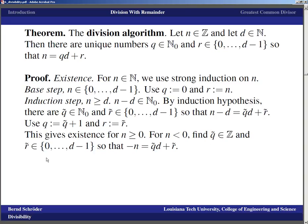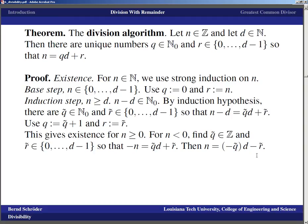For integers smaller than zero: we can find q' and r' so that the division works for −n (which is greater than zero), giving −n equals q' times d plus r'. Pushing the negative sign over gives n equals −q' times d minus r'. This almost looks like what we want except for the minus sign on r'. If r' equals zero, we just use q equals −q' and r equals 0, and we're done.